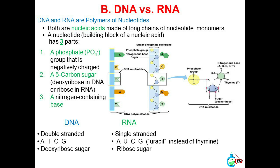B. DNA vs RNA. DNA and RNA are both polymers of nucleotides — nucleic acids made of long chains of nucleotide monomers. A nucleotide (building block of a nucleic acid) has three parts: a phosphate (PO4) group that is negatively charged; a 5-carbon sugar (deoxyribose in DNA or ribose in RNA); and a nitrogen-containing base. DNA is double-stranded while RNA is single-stranded. DNA bases are A, T, C, G; while RNA bases are A, U, C, G — uracil instead of thymine.